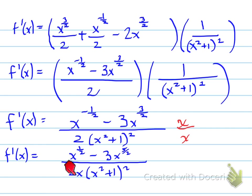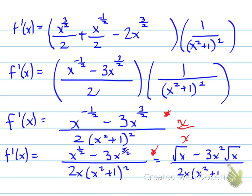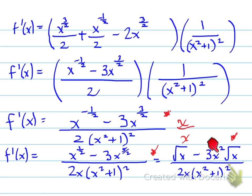If asked to convert to radical form, change all rational exponents to radicals. Note that x to the 5 halves can be split as x to the 4 halves plus 1 half, where x to the 4 halves is x squared and x to the 1 half is root x — so x to the 5 halves equals x squared times root x. Make sure you simplify radicals properly.